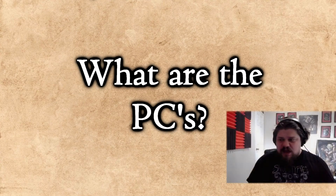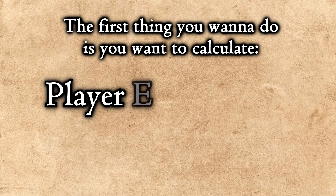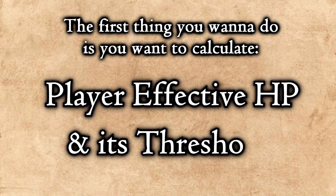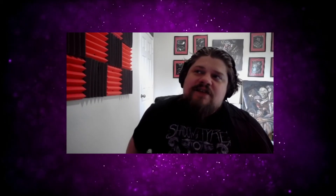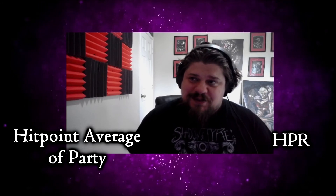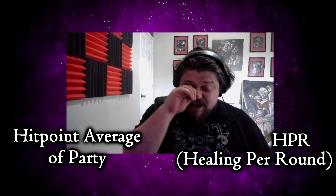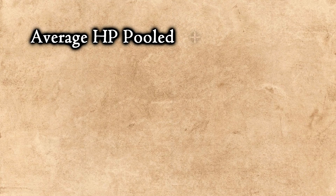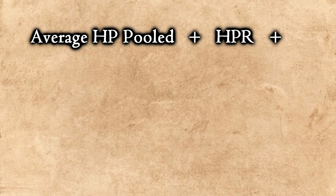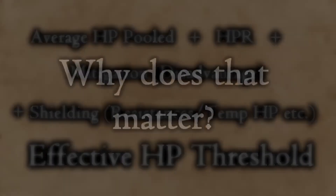The first thing you want to start with is PCs — what are the PCs? You want to calculate player effective HP and its threshold. Player effective HP represents the average amount of hit points your players are going to have versus their HPR — healing per round — plus mitigation effects and shielding. That's your effective HP threshold.